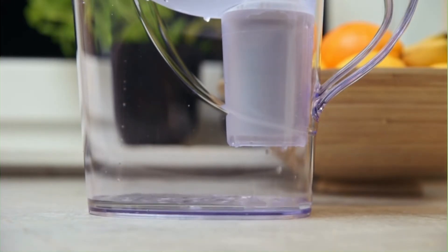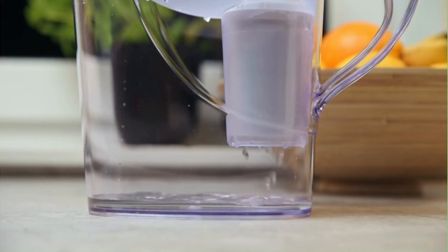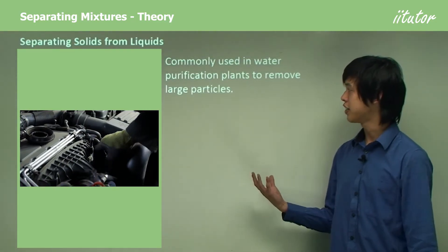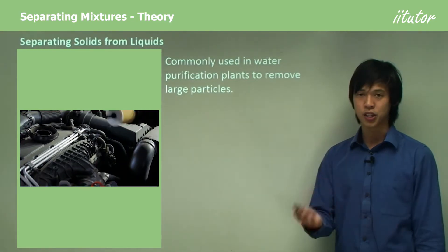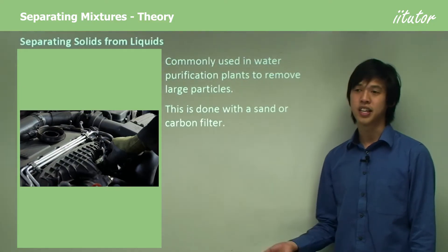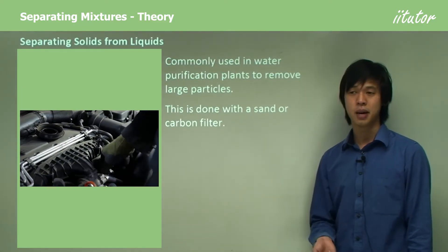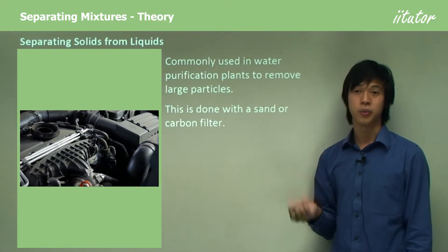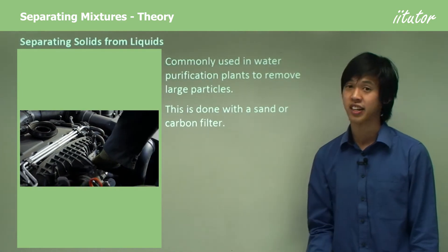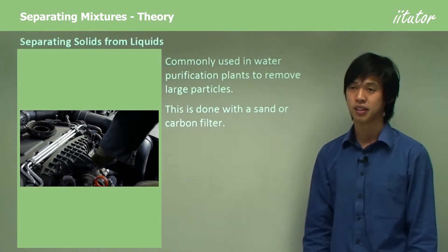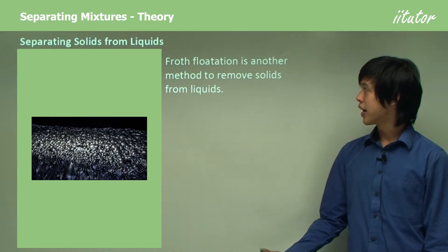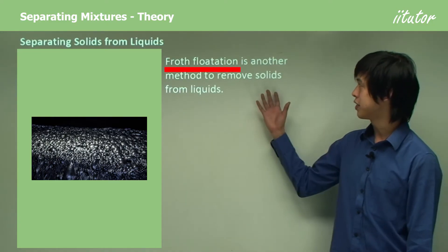Filtration uses a fine mesh to allow fluid particles to slip through while blocking the large solid particles — just like water filters and pool filters. We commonly see this process used in water purification to remove large particles from the water stream, often done with sand or carbon as a filter. These are very good filters — they work well and can even remove some bacteria.